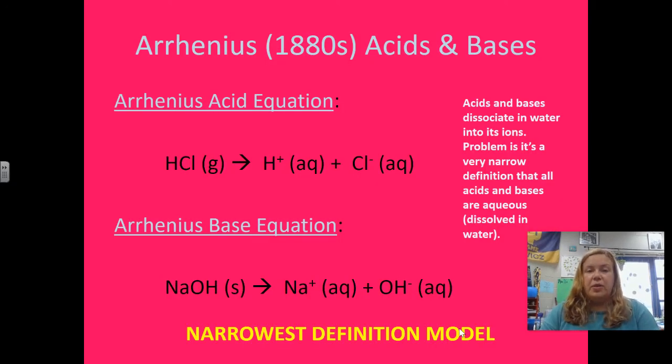First off, there are three major types of acids and bases that we refer to. The first one is the Arrhenius type. This was in the 1880s, and this was the acid equation where we thought that HCl, for example an acid, hydrochloric acid, would just break down into its ions. So it would break down into solution in the ions. That's why it's aqueous.